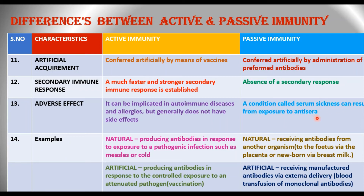In passive immunity, a condition called serum sickness can result from exposure to antiserum. Examples: natural active immunity involves producing antibodies in response to a pathogenic infection such as measles. Artificial active immunity produces antibodies in response to controlled exposure to an attenuated pathogen — that is vaccination. Natural passive immunity involves receiving antibodies from mother to fetus or to the newborn. Artificial passive immunity examples include receiving manufactured antibodies via external delivery — blood transfusion or monoclonal antibodies.